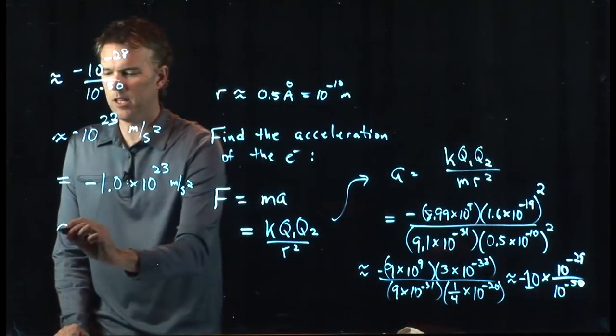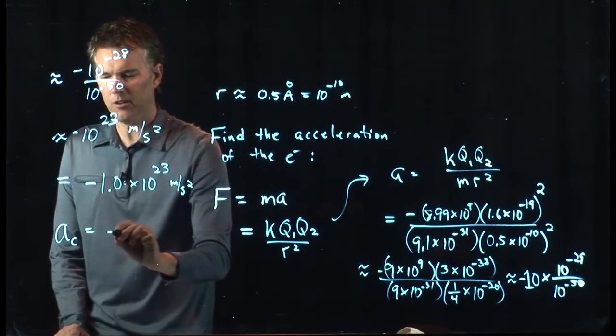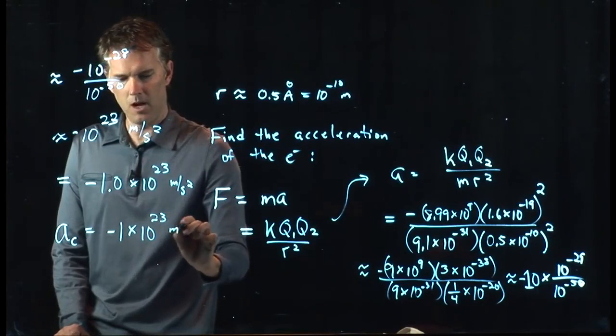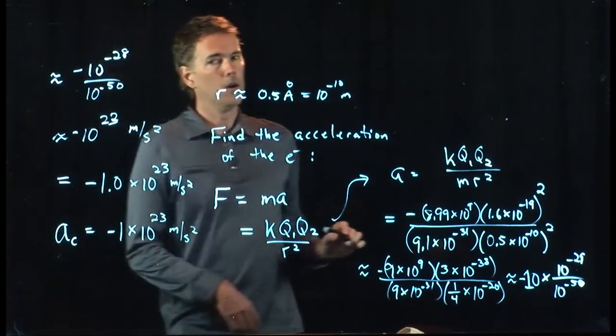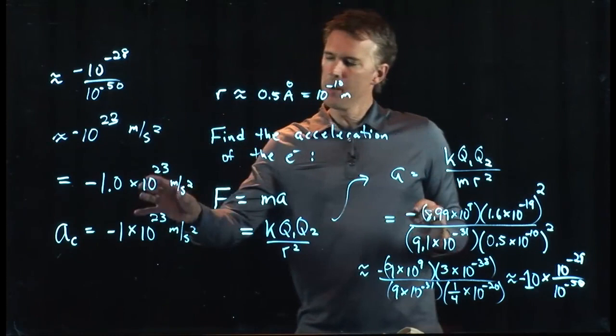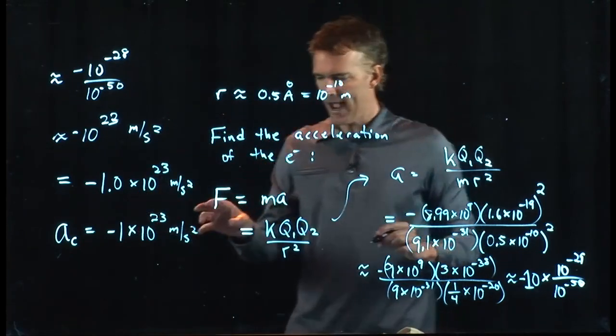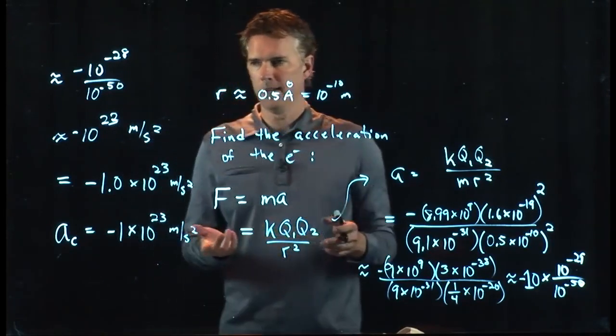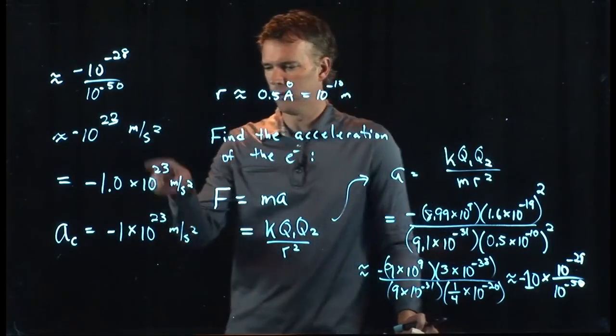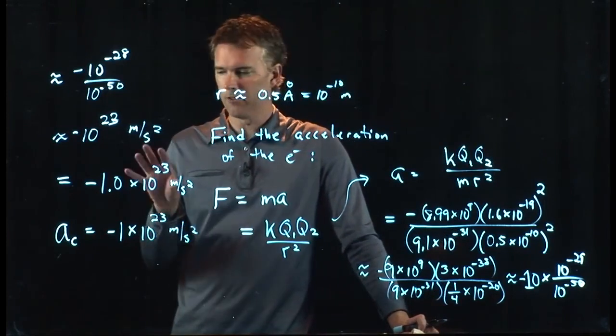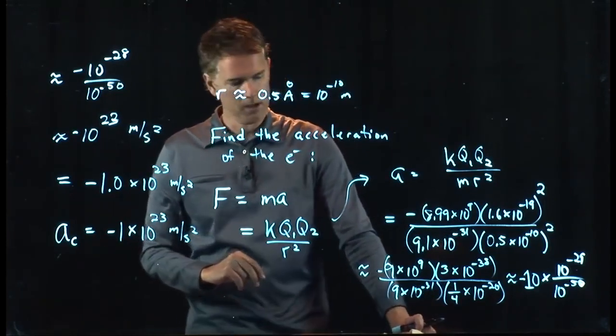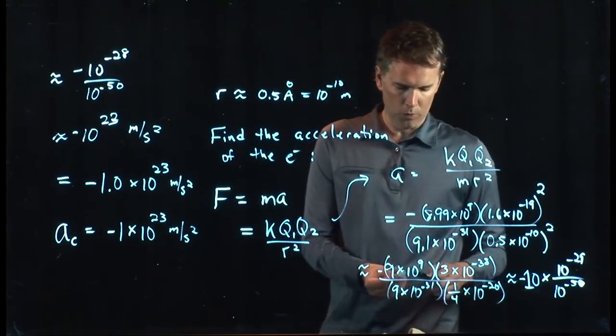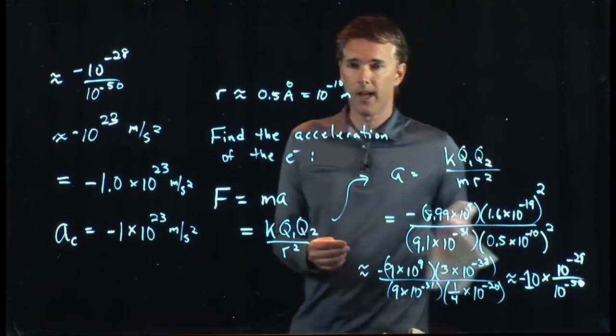Good. 10 to the 23 meters per second squared. That is the acceleration. Specifically, it's the centripetal acceleration of the electron in its orbit, which is really high. That's a very big value. Gravity, how fast does gravity accelerate things downwards? 9.8 meters per second squared. This is 22 orders of magnitude bigger. That is a very big number.